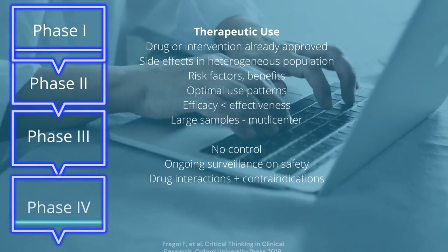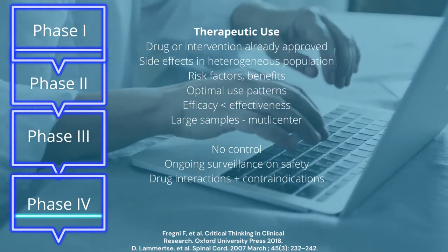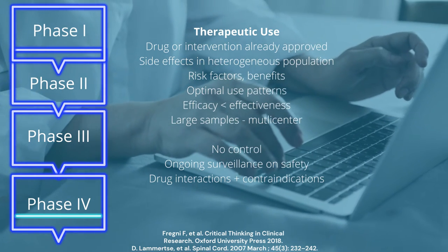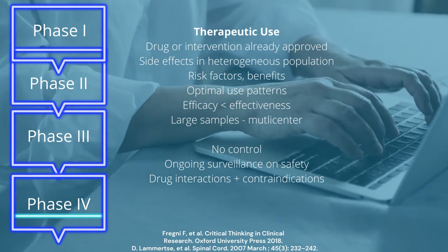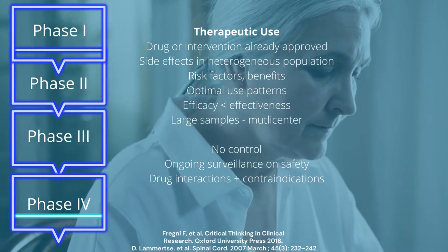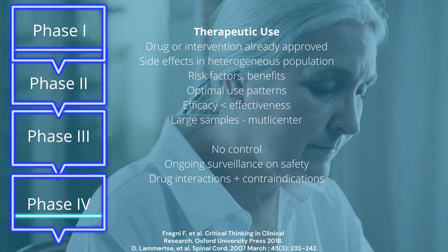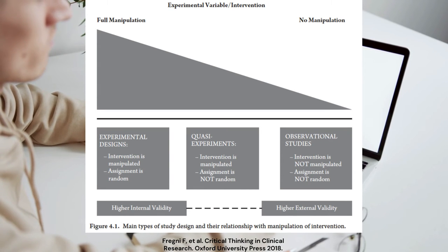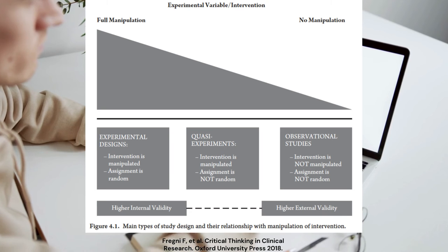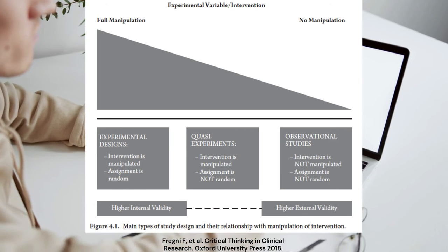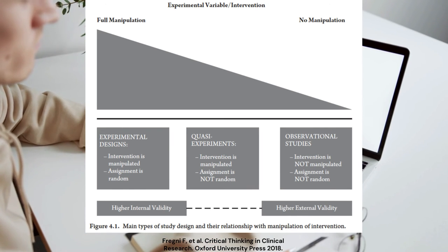In Phase 4 clinical trials, the intervention is already approved by the FDA, and it mainly focuses on side effects or effects in heterogeneous populations. It also assesses minimal risk factors, other benefits, and different optimal use patterns, focusing more on effectiveness rather than efficacy. It has a large sample population and is recommended to be a multi-center study. The more you control exposure to the independent variable, the higher the internal validity. The less you control the environment and the more it resembles real life, the higher the external validity, which also assesses for effectiveness.